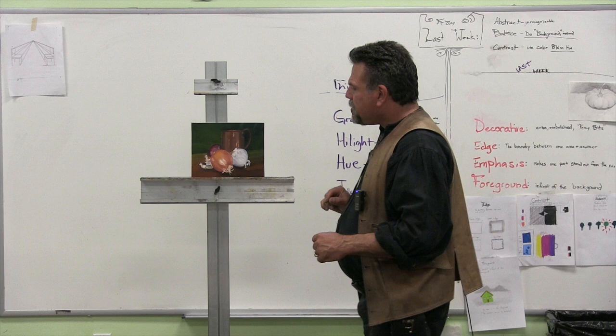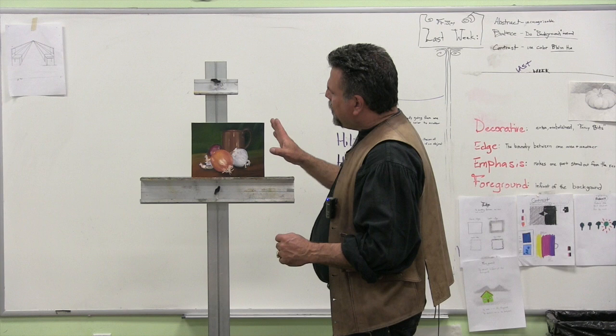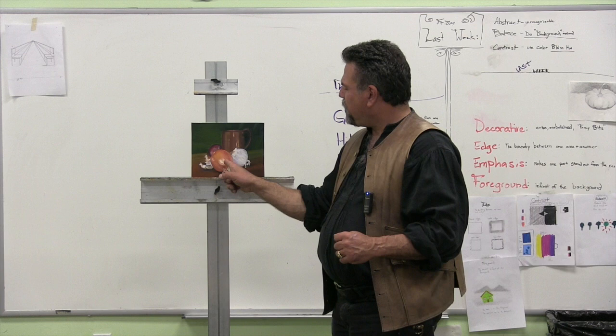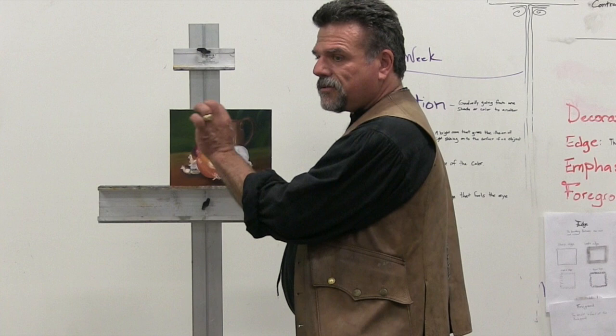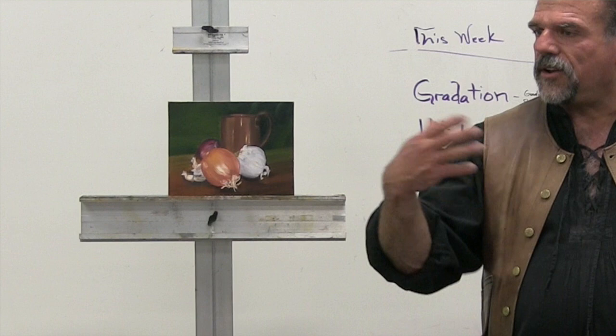It doesn't mean it doesn't have merit. The issue is we're here but then we're stuck. There's a little bit of highlight here, and one thing I like in a painting is a triangle. You have light here, you have light here, but I'd like to have a third central focal point.